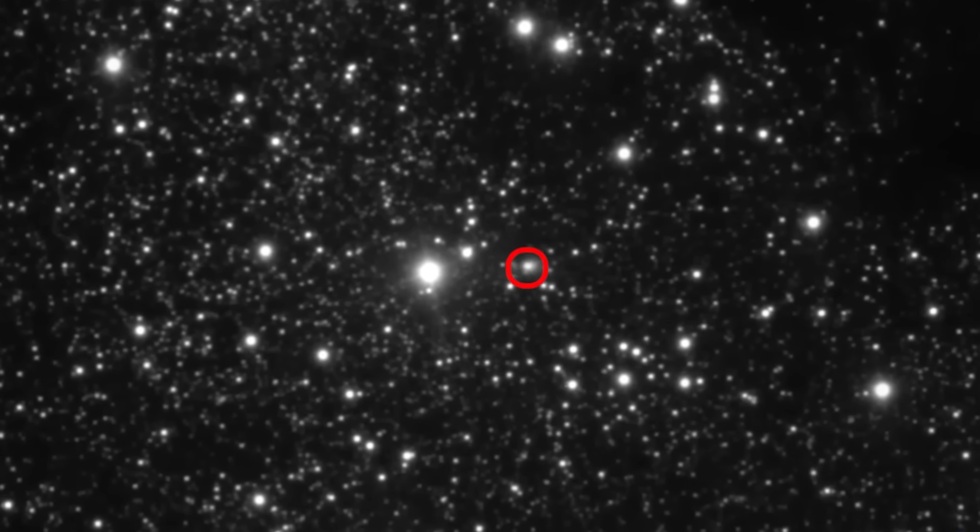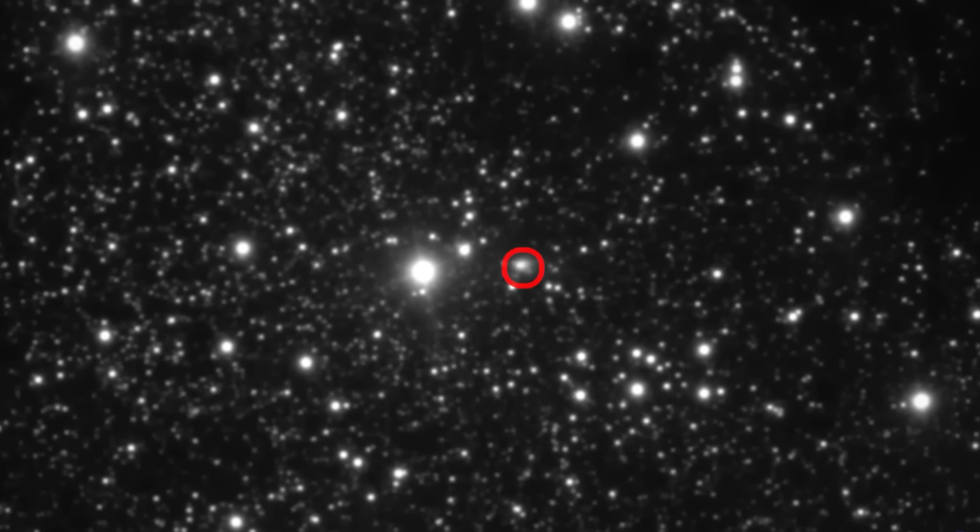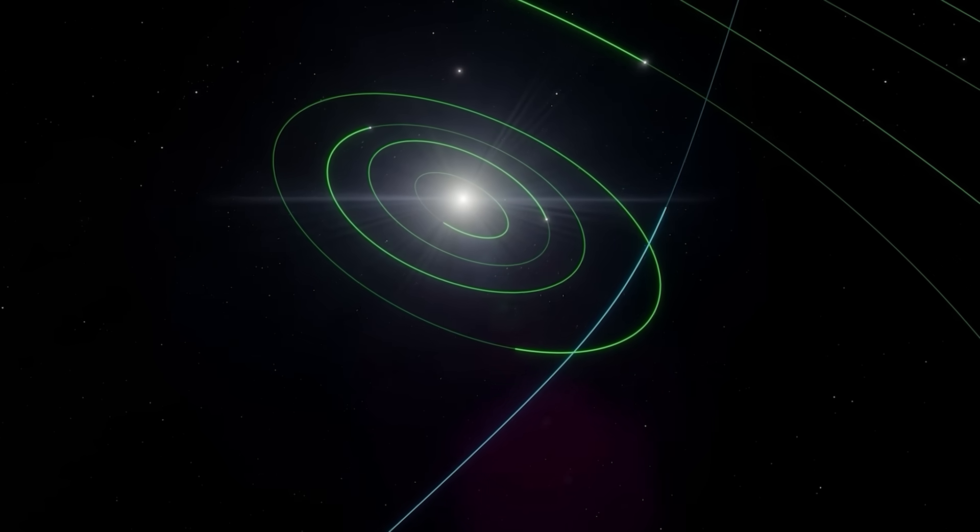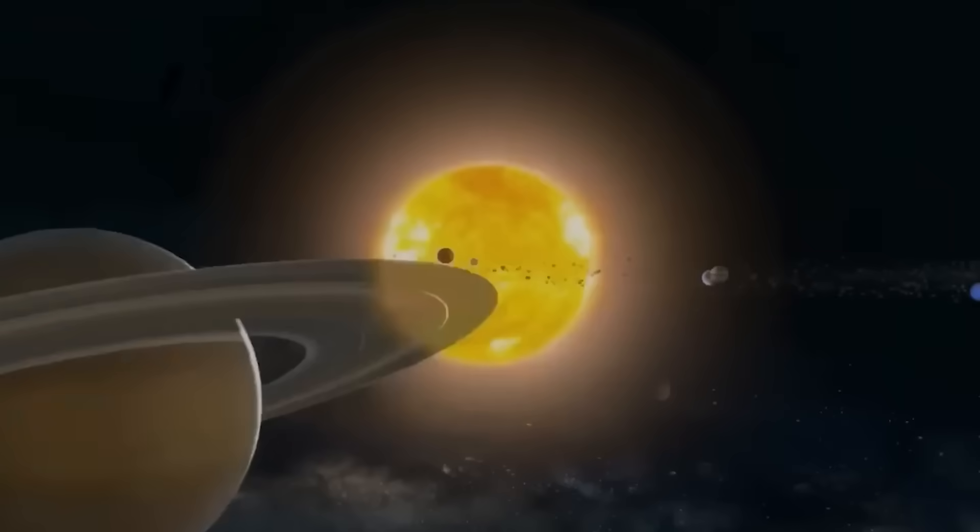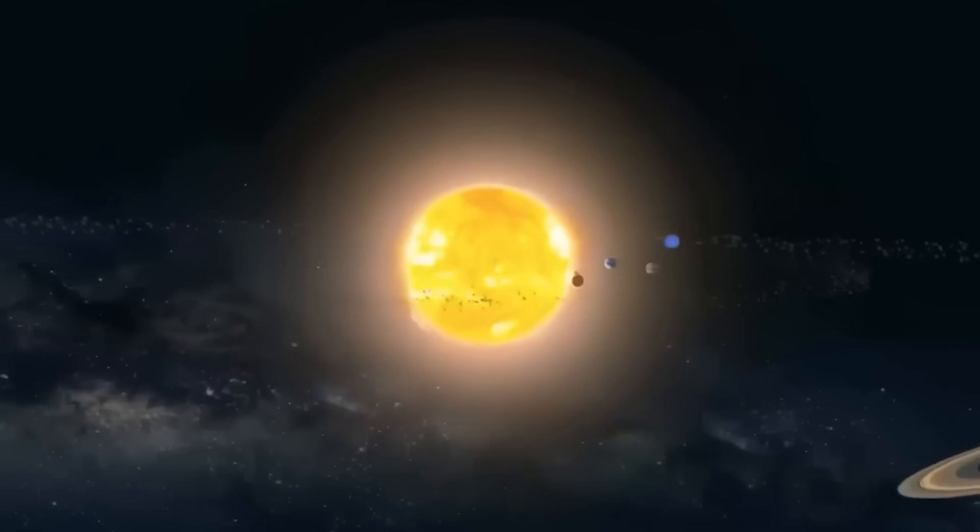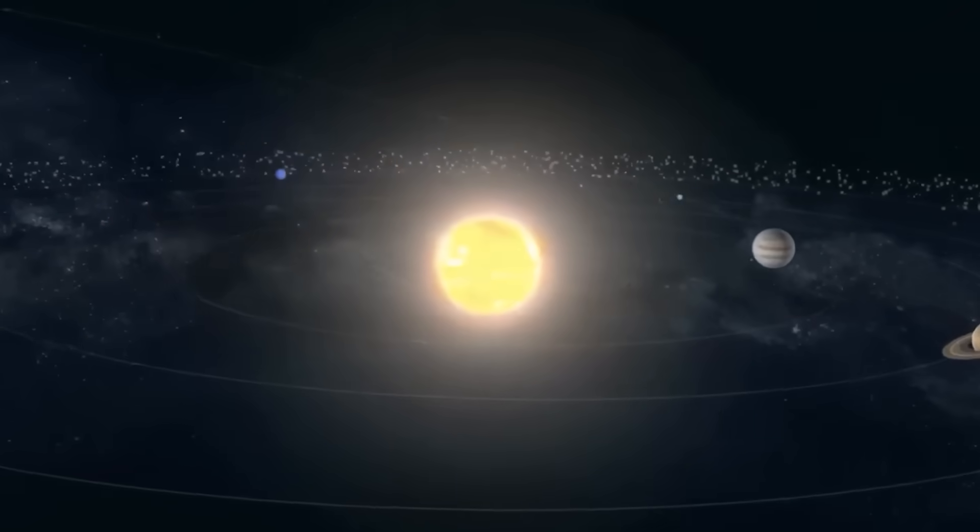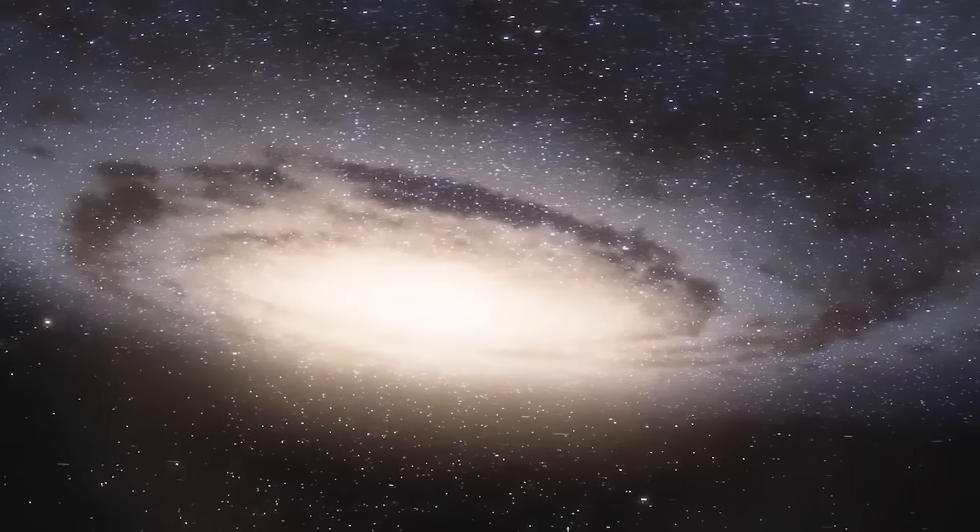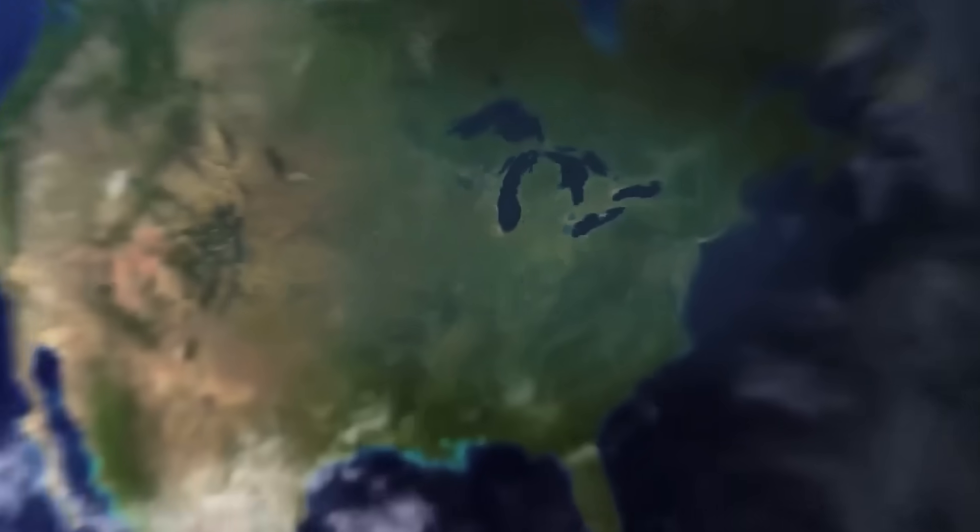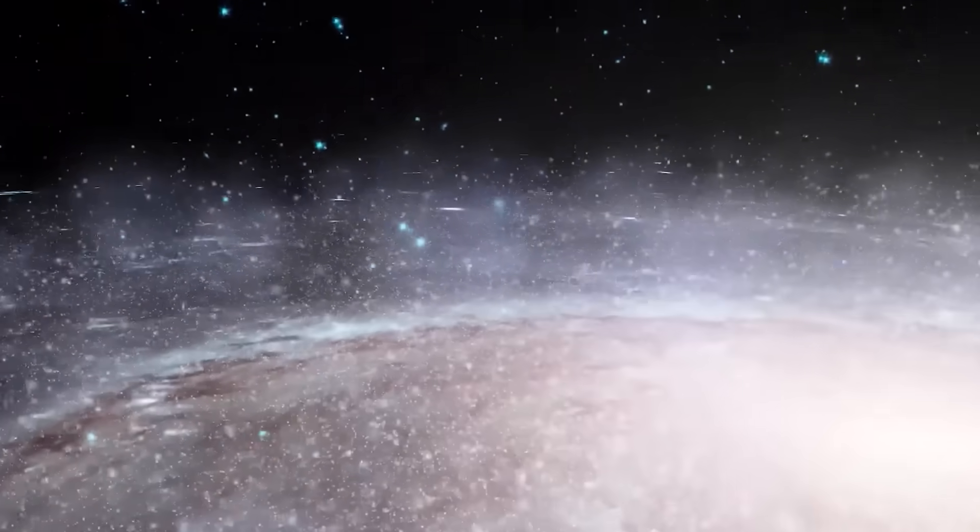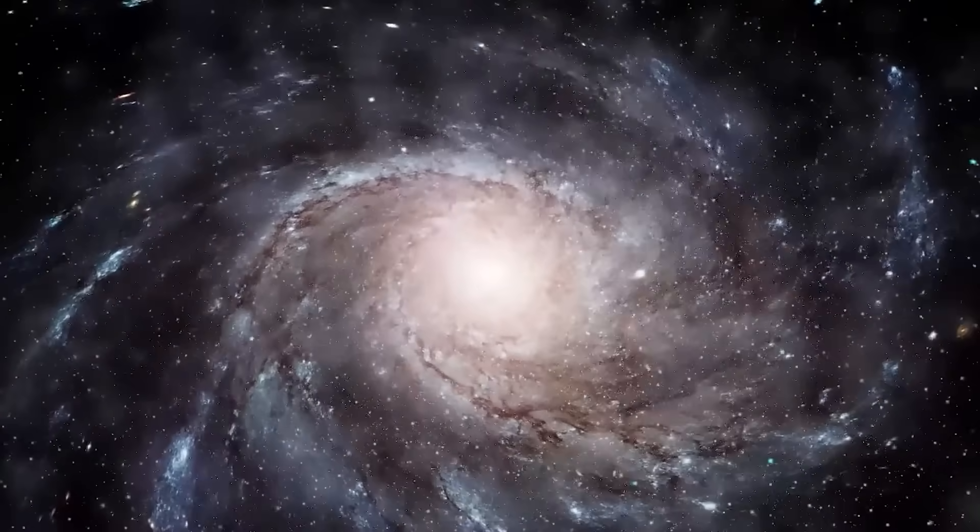Whether 3i Atlas proves to be a pristine comet from the early galaxy or something more exotic, its visit has already changed our perspective. We now know that our solar system sits along a cosmic highway traveled by ancient wanderers carrying messages from distant worlds. Each visitor teaches us something new about the universe beyond our neighborhood, and reminds us that we're part of a much larger, more connected cosmos than we ever imagined.